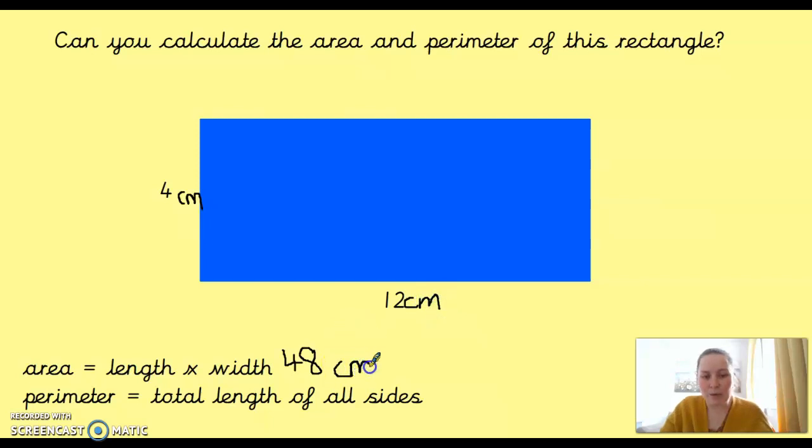Then, for the perimeter, now we have to remember to add all the sides. A common mistake here would just be add 4 and 12, but that's not the total length of all the sides. So, we've got 4 and 12 and 4 and 12, because it's a rectangle. And we know that rectangles have two pairs of equal sides. So, you need to add them up however you find easiest. You might find it easier to double 12 and double 4 and add them together, or you might do 12 add 4, it's 16, and then another 12 add 4, it's 16.